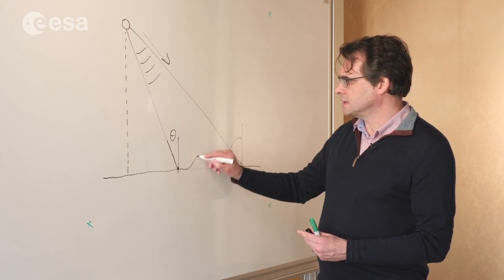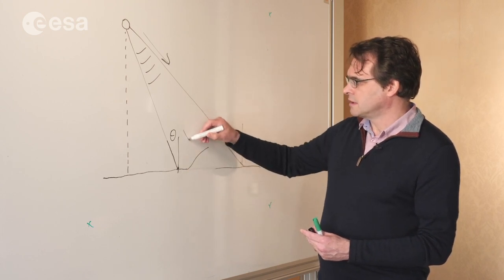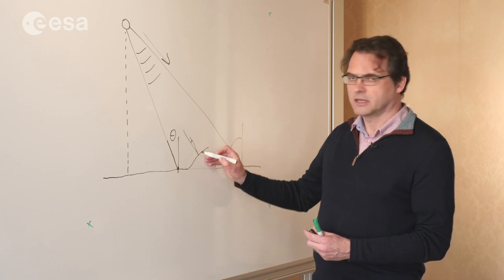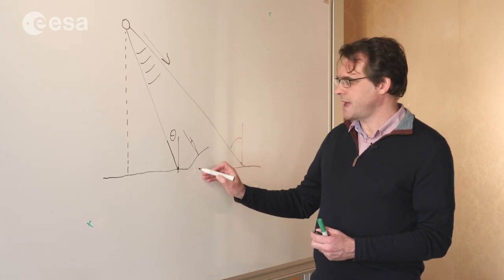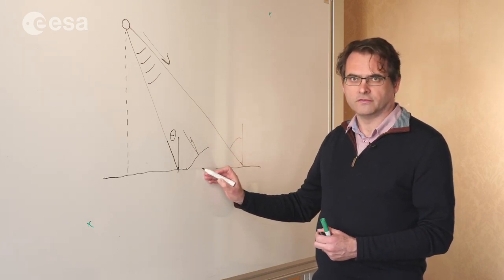If the slope is increasing, for example, the local incidence angle might be considerably smaller than you would expect if you're just looking at the incidence angle for the reference surface.